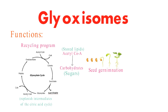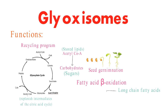Glyoxosomes aren't just about building stuff up — they're also involved in breaking things down. They play a minor role in fatty acid beta oxidation, the process that breaks down long-chain fatty acids into smaller units called acetyl-CoA. These acetyl-CoA units can then enter the glyoxalate cycle for the carbohydrate building process.